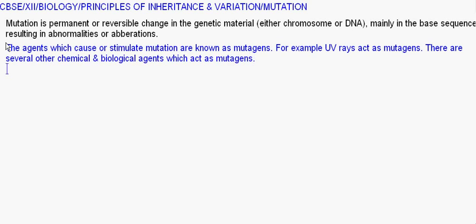Now coming to types of mutation. Mutation can be broadly divided into two classes: chromosomal mutation and gene mutation, also called DNA mutation. As we know, a chromosome is made up of chromatids, which are thread-like structures — basically a super coil structure made up of DNA double helix. If there is any addition or deletion in the base sequence, the whole chromosome or chromatid structure will change, causing many abnormalities or aberrations, such as those seen in cancer.